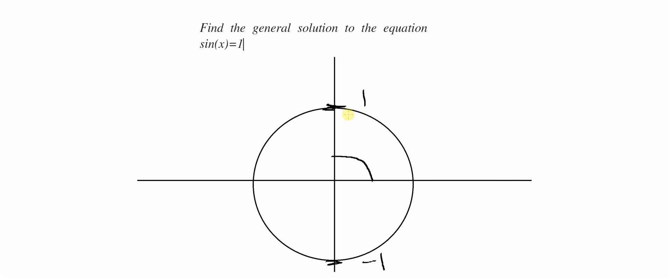In this question, we're going to find the general solution to a trigonometric equation. The trigonometric equation we have is sine x equals 1. So we're looking for an angle that you could use for x in which the equation sine x would be equal to 1.